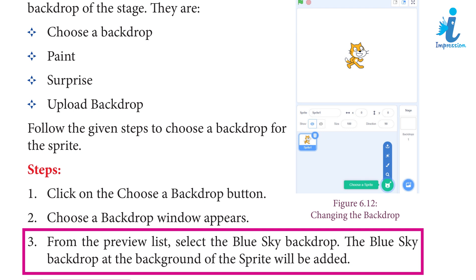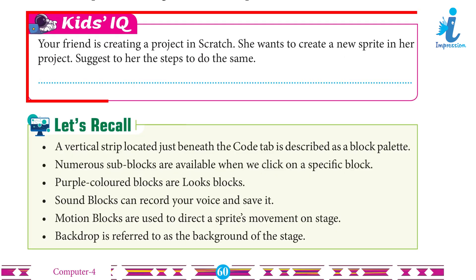Follow the given steps to choose a backdrop. Step 1: Click on the 'Choose a Backdrop' button. Step 2: A 'Choose a Backdrop' window appears. Step 3: From the preview list, select the Blue Sky backdrop — the Blue Sky backdrop will be added as the background of the sprite. Activity: Your friend is creating a project in Scratch and wants to create a new sprite. Suggest to her the steps to do so.